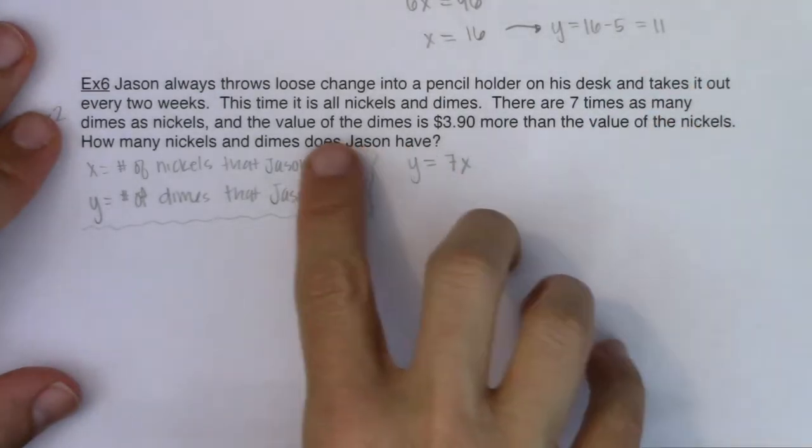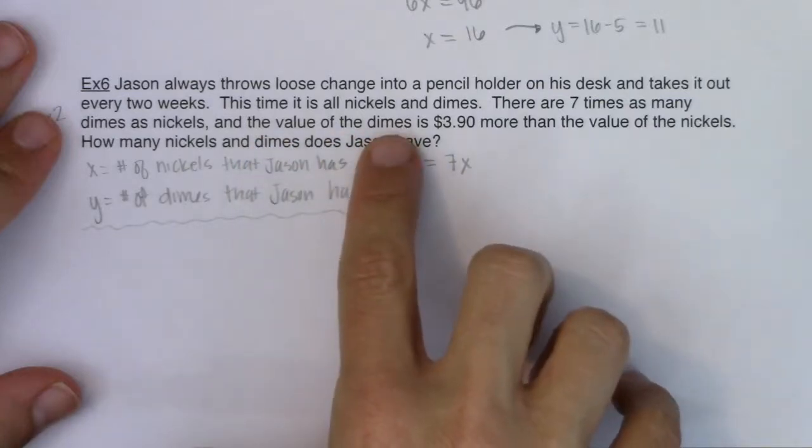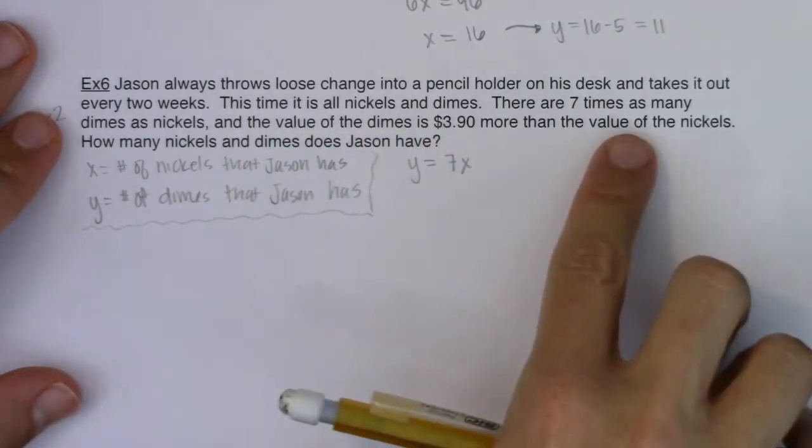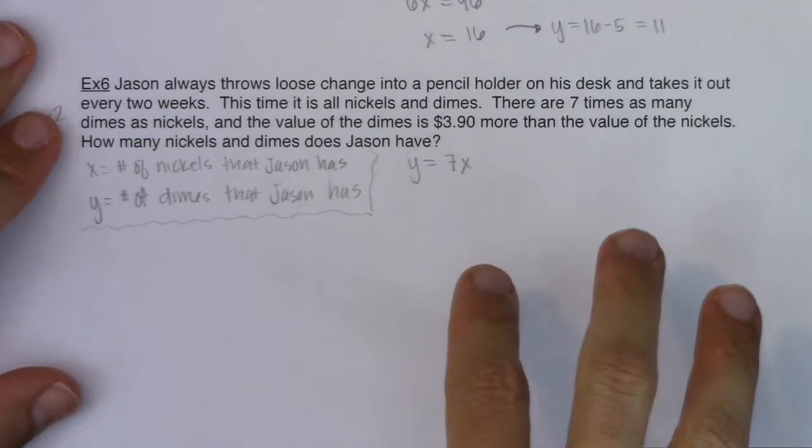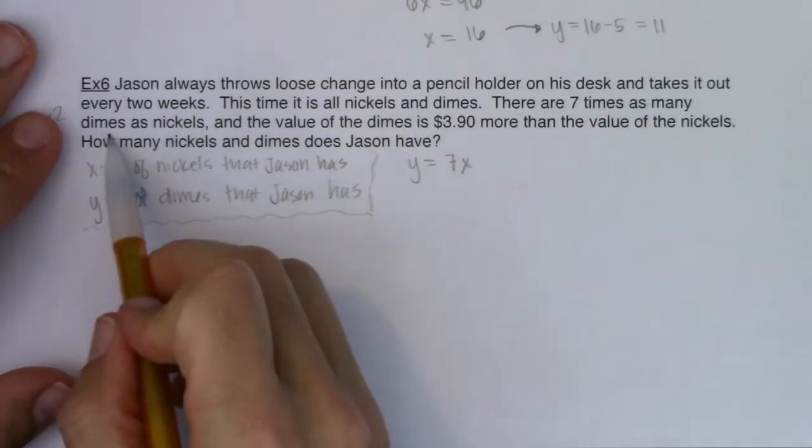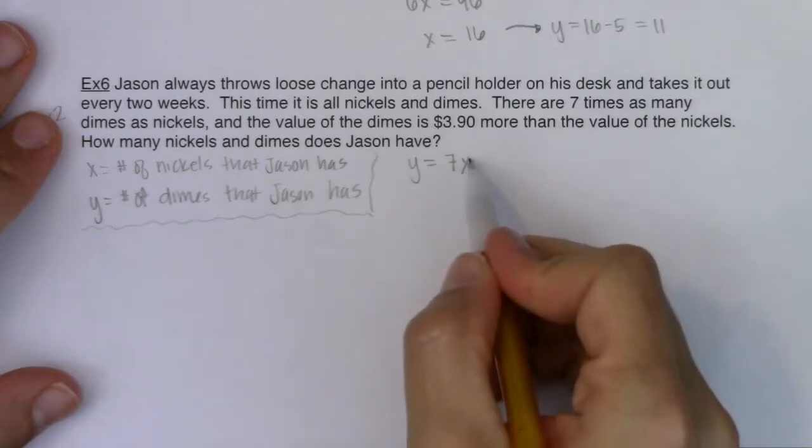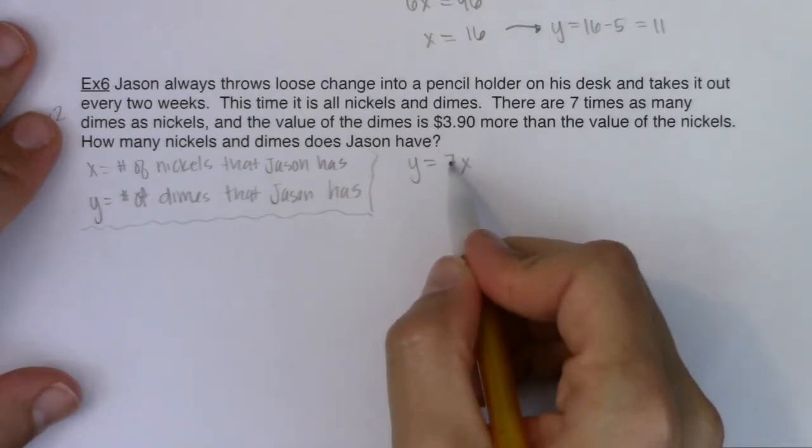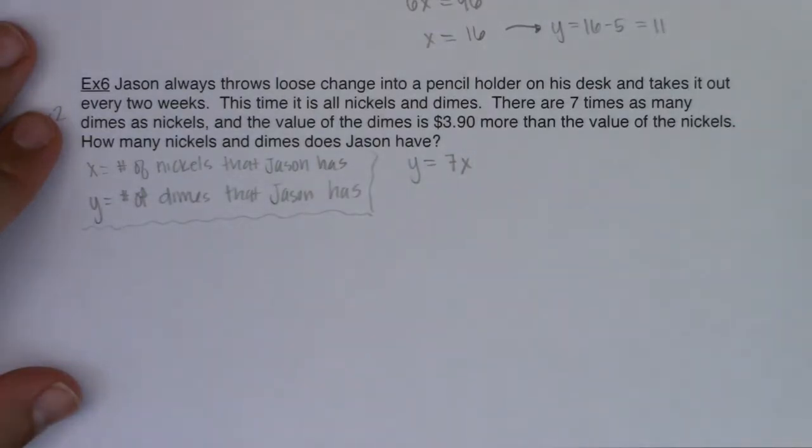Because it also says here that the value of the dimes is way more than the value of the nickels. So he should have more dimes than nickels. So again, if you take the number of nickels, multiply that by seven, that's as many dimes as Jason has.